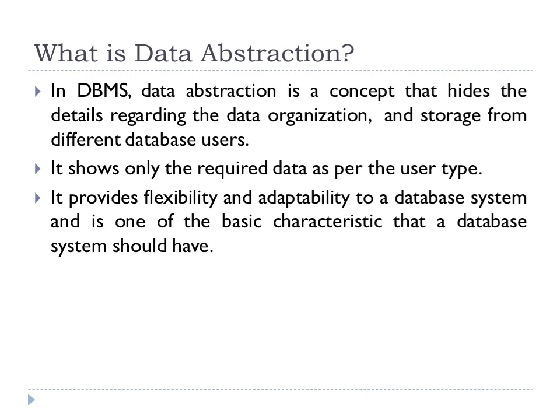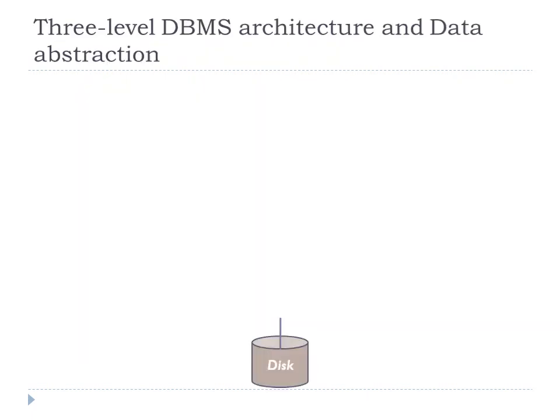A database system that is able to separate the three different levels exhibits flexibility and adaptability. This flexibility and adaptability is one of the very basic characteristics of a database system, and it separates the concept from the very basic file processing system. The flexibility and adaptability provided by any database system is called data abstraction.